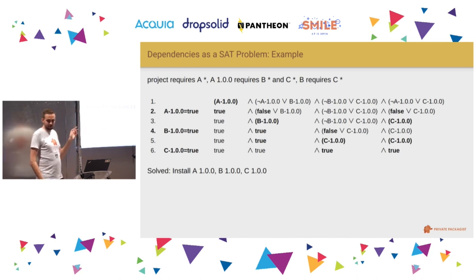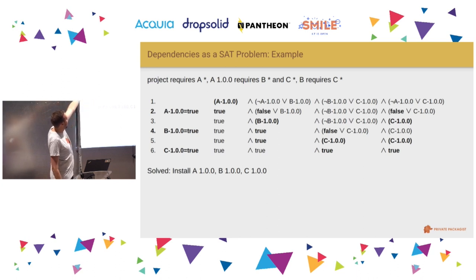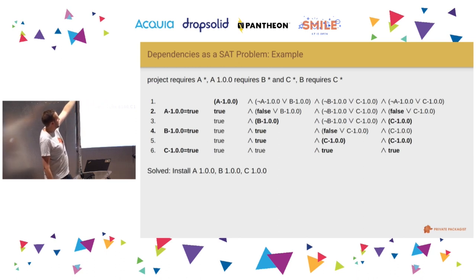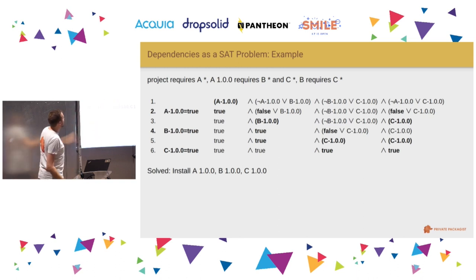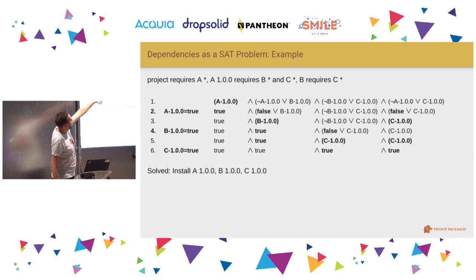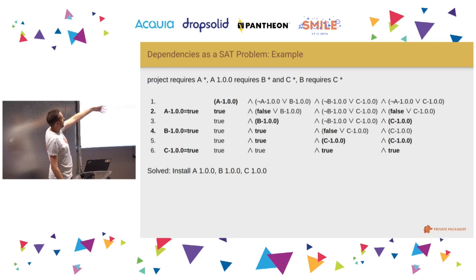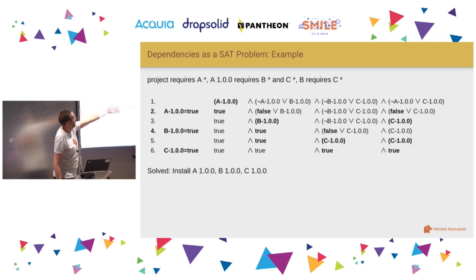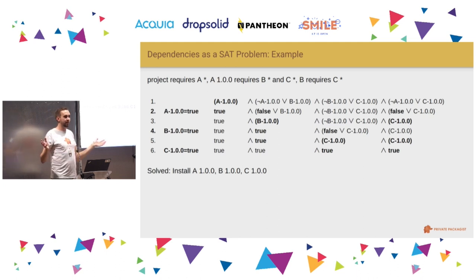Here's how this works in practice with a simple example. We have a project that requires A, so A1 is a clause by itself. A1 requires B and C, B requires C. You start: clearly A1 has to be true. Set A1 to true, so NOT A1 is false. Then false OR B1 simplifies to B1, and false OR C1 simplifies to C1. Set B1 to true, fill that in. Then C1 has to be true. Resolution complete: A1, B1, and C1 are the three packages to install.